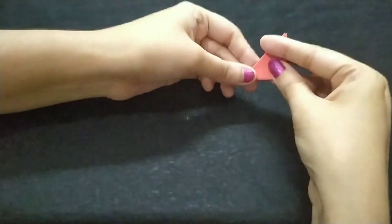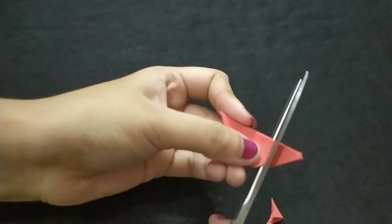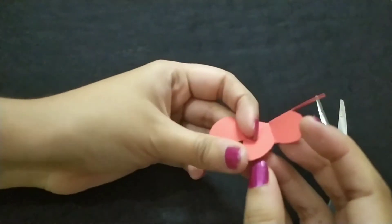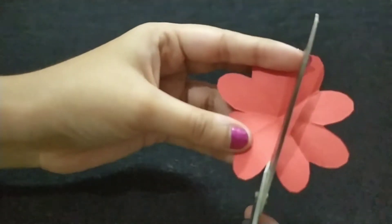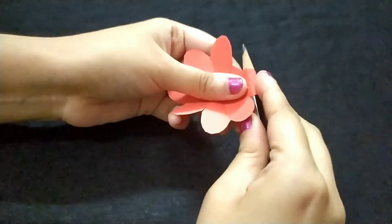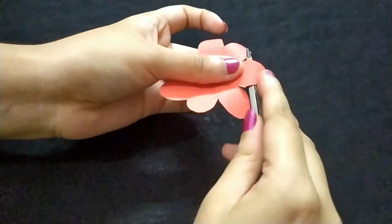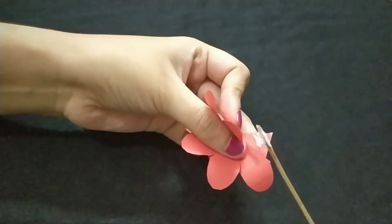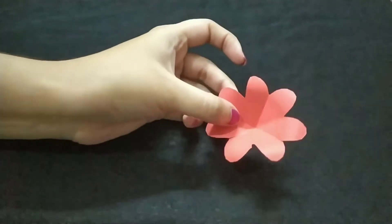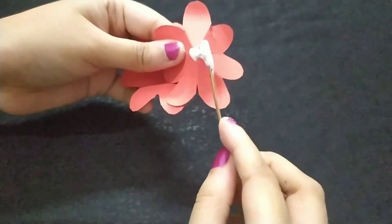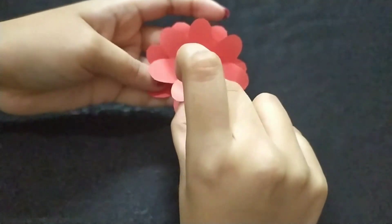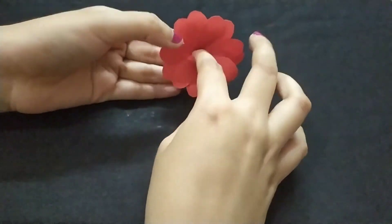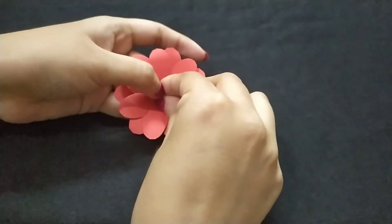Now I am making a flower. This step is very important, so don't skip it. I have made two such flowers. You can make more if you want your flower to be thicker. I want to keep it simple, so I am just using a bead to decorate it.